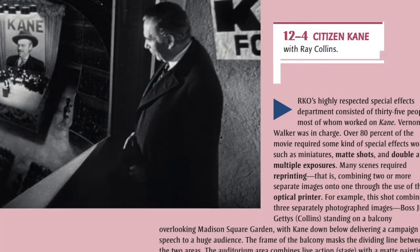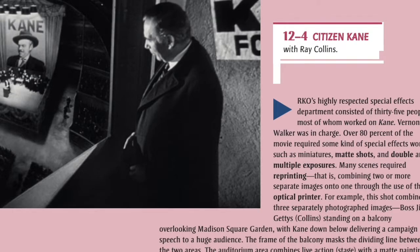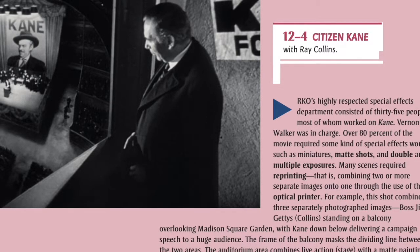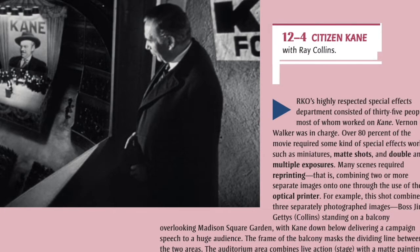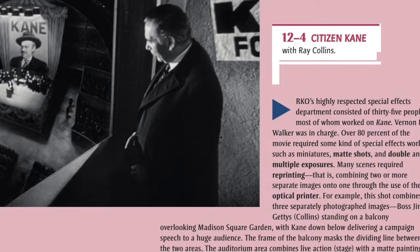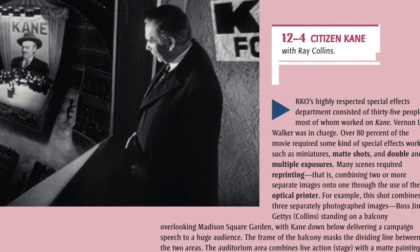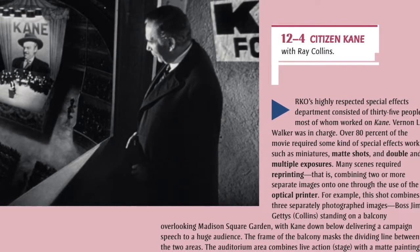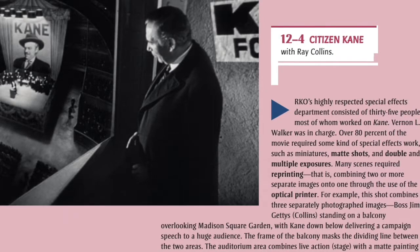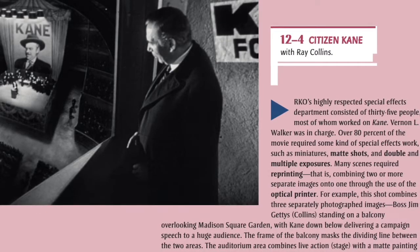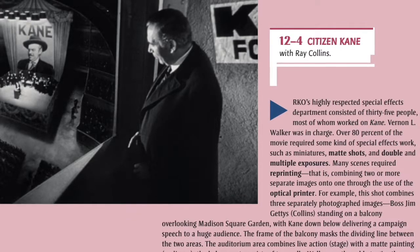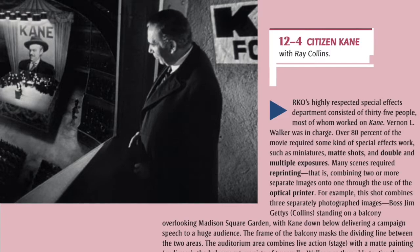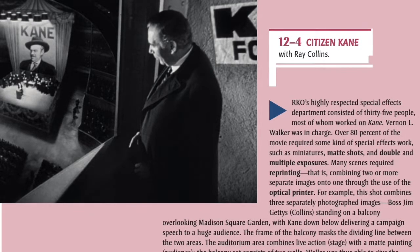12-4: Citizen Kane with Ray Collins. RKO's highly respected special effects department consisted of 35 people, most of whom worked on Kane. Vernon L. Walker was in charge. Over 80% of the movie required some kind of special effects work, such as miniatures, matte shots, and double and multiple exposures. Many scenes required reprinting — that is, combining two or more separate images onto one through the use of the optical printer.